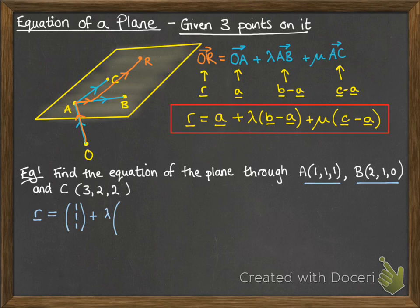so we're looking at B subtract A there. And then mu multiples of C minus A, so we'll subtract those two vectors. And that gives us the equation of that plane.